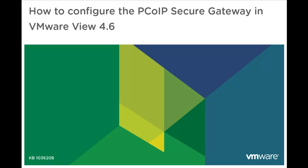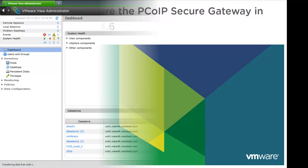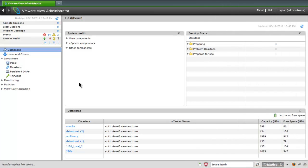This video provides information on configuring the PC over IP Secure Gateway in VMware View 4.6, and is based on VMware Knowledge Base Article 1036208. The PC over IP Secure Gateway is a feature introduced in VMware View 4.6 that allows PC over IP connections to be proxied through security servers and/or connection servers.